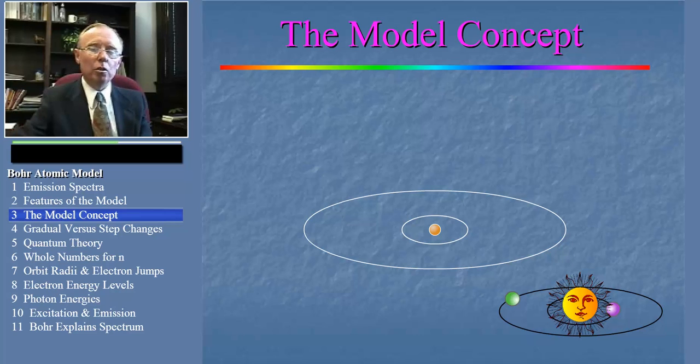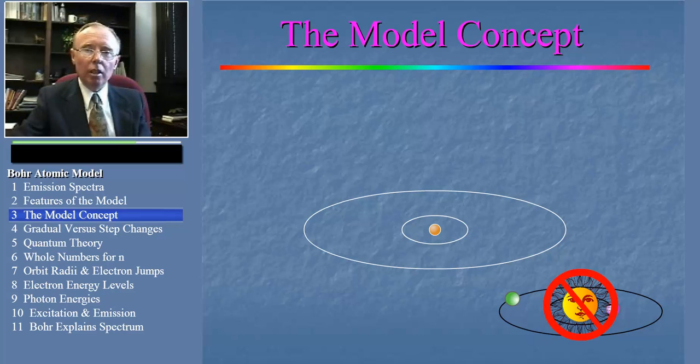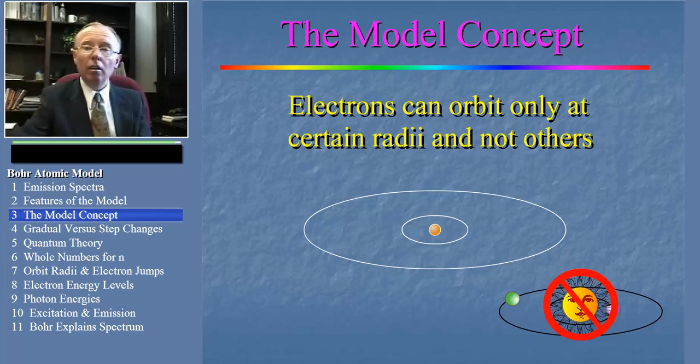But there's an important difference between the solar system and Bohr's model of the atom. Conceivably, in the solar system, a planet could be orbiting the sun at any radius. But in Bohr's model, electrons are allowed to orbit the nucleus only at certain radii and not others.